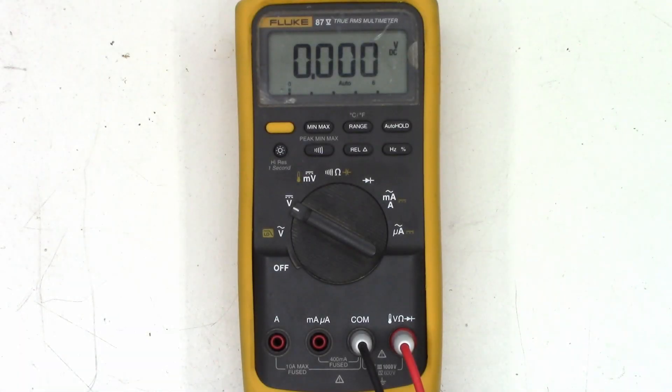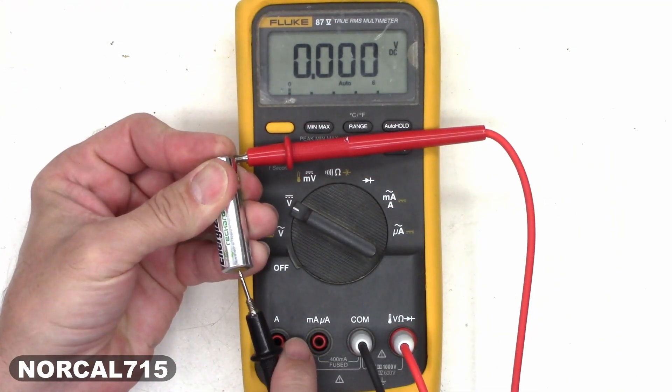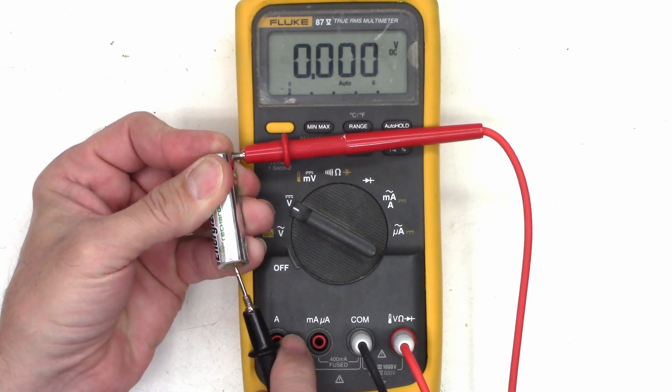Okay, so I have a Fluke 87 that was donated. It stopped working. So I'm on the DC volt range and I have a battery here. I get nothing when I test the battery.